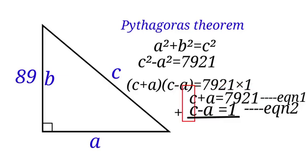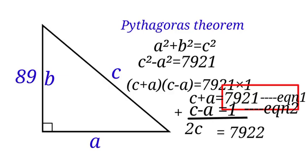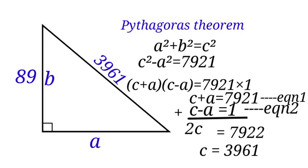C plus C will give us 2C. And A plus minus A, that would be 0. 7,921 plus 1, that would give us 7,922. When we divide both sides by 2, we have C equals to 3,961. The value of C here is 3,961.